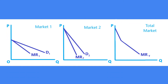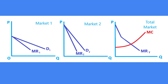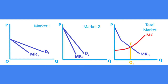These diagrams show the price and output determination for a price discriminating monopoly firm. The total market indicates the single seller monopoly firm. The monopolist sells his product in two markets, 1 and 2. Market 1 has high elastic demand and market 2 has low elastic demand. The demand curve in market 1 is D1 with marginal revenue curve MR1, and in market 2 the corresponding curves are D2 and MR2. In the total market, the marginal revenue curve MRT is drawn by the lateral summation of MR1 and MR2, and MC is the marginal cost curve. The intersection of MRT and MC at point E determines the equilibrium level of output OQT.